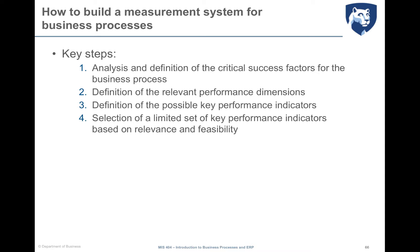In order to establish a sound business process performance measurement system, there are essentially four steps. The first is to analyze and define which are the critical success factors of the business process. Second, define the relevant performance dimensions. Then define the possible key performance indicators mapping those dimensions. Finally, select only a limited set of KPIs based on their relevance and feasibility.